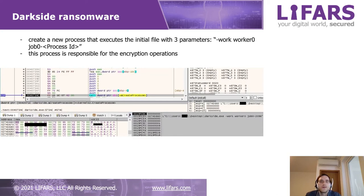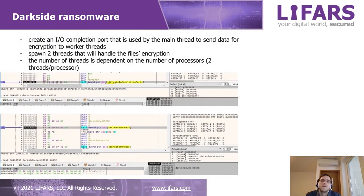The malware creates a new process that will execute the initial file with three parameters. This new process will be responsible for the encryption of the files. DarkSide creates an IO completion port that will be used by the main thread to send data to the worker threads, and it will also spawn two threads to handle the encryption. The number of threads depends on the number of processors.